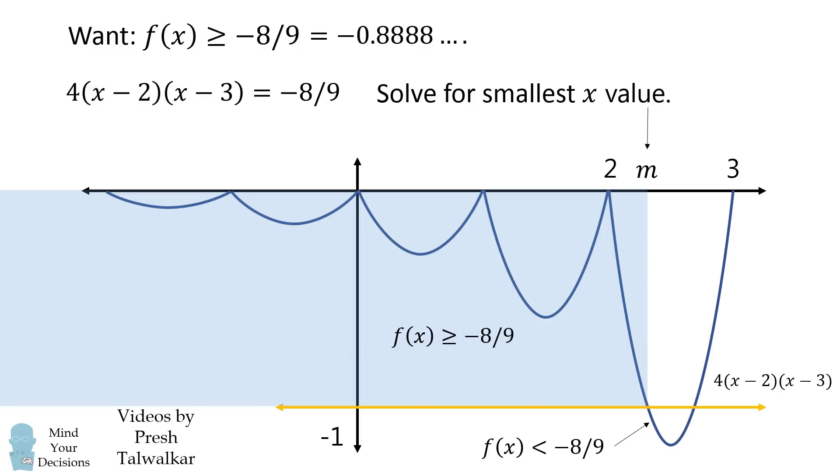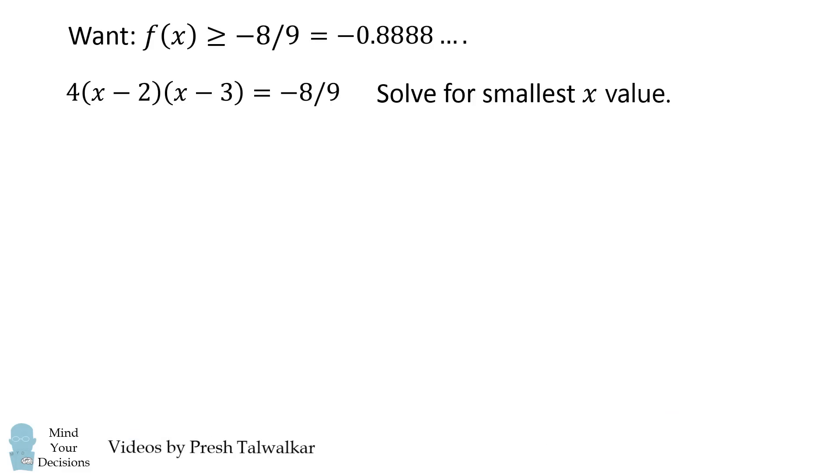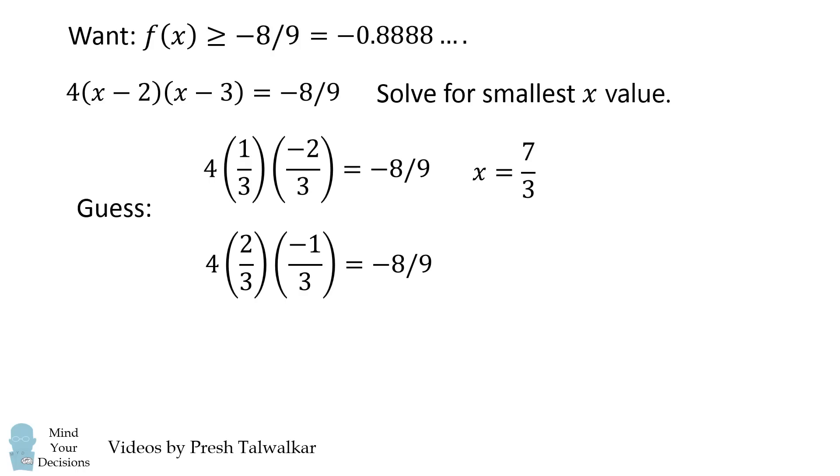We want to solve where this parabola's equation is equal to negative 8 over 9 and we solve for the smallest value. So let's go ahead and solve this algebra problem. But there's a little trick. You might actually guess some of the factors. Notice that 4 times 1 third times negative 2 thirds is equal to negative 8 over 9. And 4 times 2 thirds times negative 1 third is also equal to negative 8 over 9. So you can quickly see the first equation x would be equal to 7 thirds and the second equation x is equal to 8 over 3.